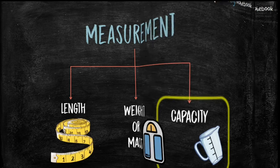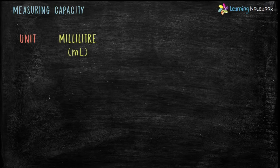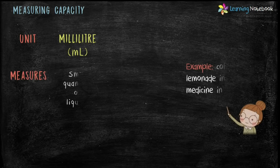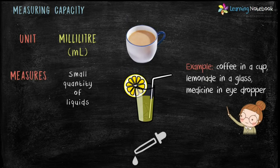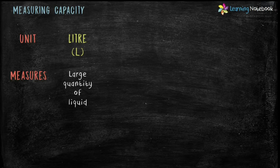Students, let's see the units to measure capacity. The first unit is milliliter, which is denoted by ml. Milliliter is used to measure small quantities of liquids, like coffee in a cup, lemonade in a glass, and medicine in an eyedropper.